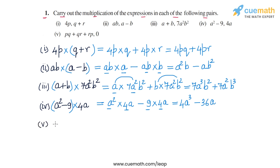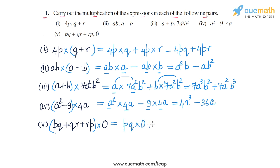Finally, in part 5, we have to multiply the two expressions (pq + qr + rp) and 0. The first expression is a trinomial and the second is simply 0. Anything multiplied by 0 is 0, so the product should be 0. Applying the distributive law anyway, we write pq into 0 plus qr into 0 plus rp into 0. Each of these three products is 0, so we get 0 + 0 + 0, which gives us 0 as the product for part 5.